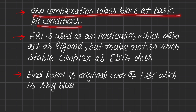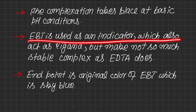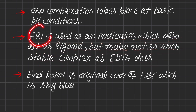Since all complexation takes place under basic pH conditions, we will definitely add a base. EBT (Eriochrome Black T) is used as the indicator in this titration; it also works as a ligand but is not very stable. EBT is also called Eriochrome Black T or Solochrome Black T because after reacting with metal its color resembles wine red. It forms only two coordinate covalent bonds with metal, making a less stable complex. The end point of this titration is a sky blue color.